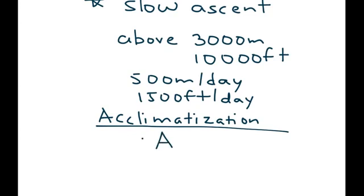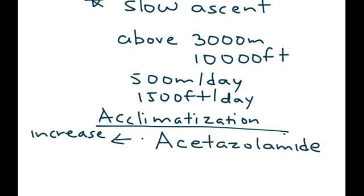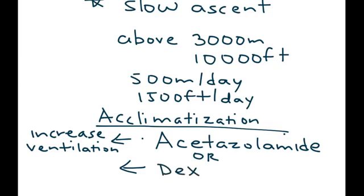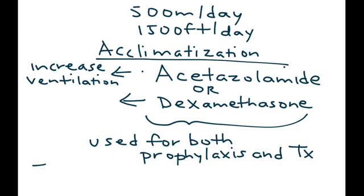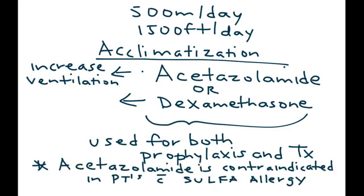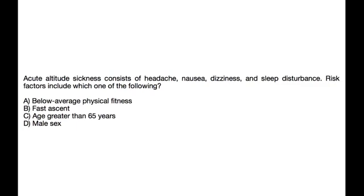Slow ascent gives the body the opportunity for acclimatization. In addition, medications previously described for treatment can also be used for prevention: acetazolamide, which helps increase ventilation, and dexamethasone. These two drugs can be used for both prophylaxis and treatment. One important point: acetazolamide is contraindicated in patients who have a sulfa allergy — in those cases, use dexamethasone instead.